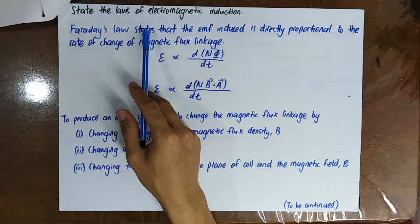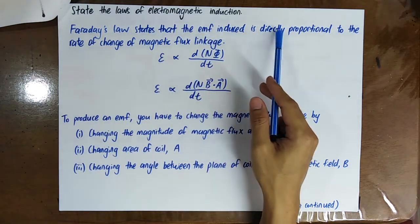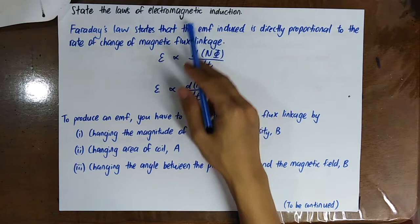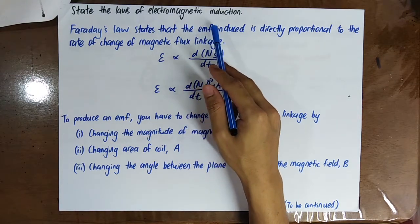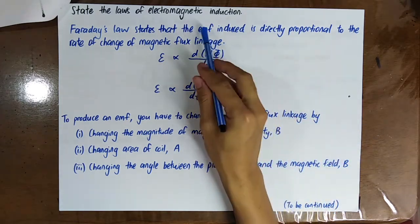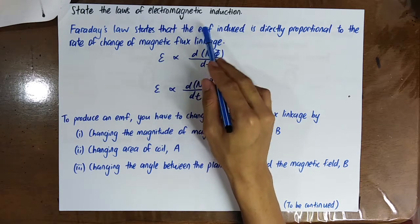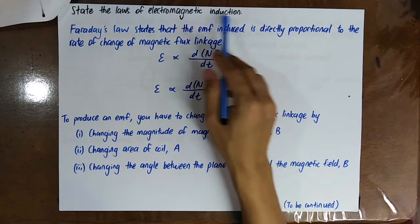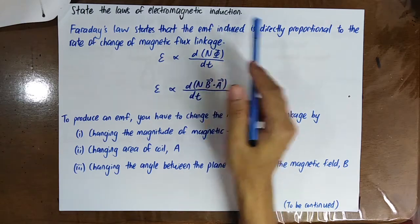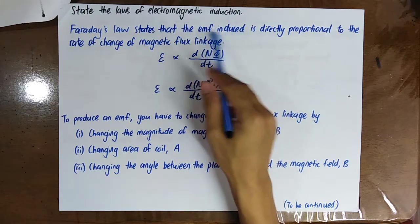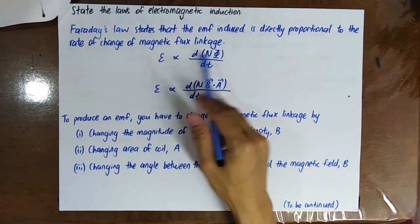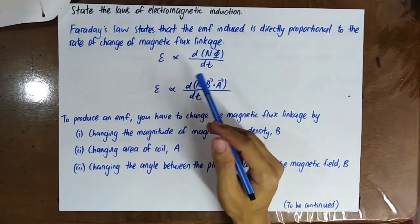Faraday's law states that the EMF induced is directly proportional to the rate of change of magnetic flux linkage. EMF stands for electromotive force, which is the maximum potential difference across a battery. The EMF induced is sometimes called back EMF, which I will explain later.